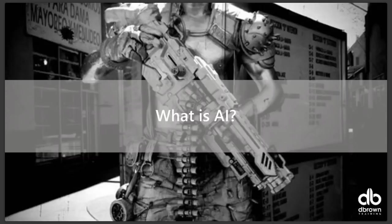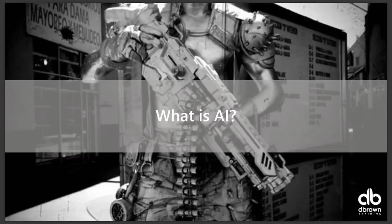AI simply means artificial intelligence, which is giving computers the ability to think like human beings. Computers are going to think like human beings and do some of the things we humans can do — probably even much faster and more efficiently than we currently do. We have all heard of self-driving cars; that's one example of AI. Self-driving cars are driven without human intervention and can hit the road and do everything a human being would do.